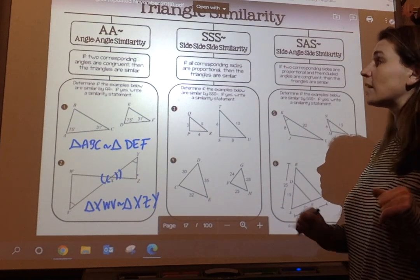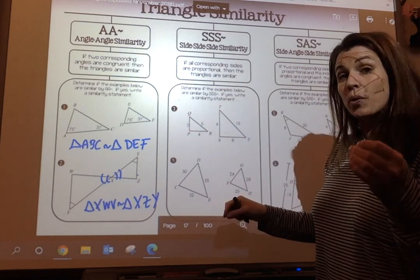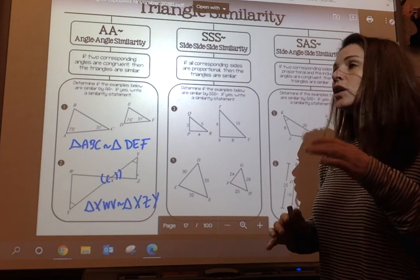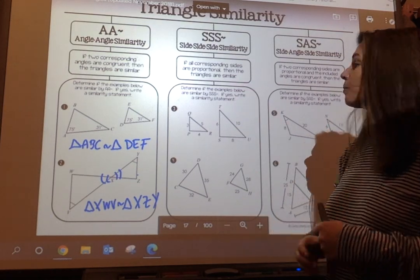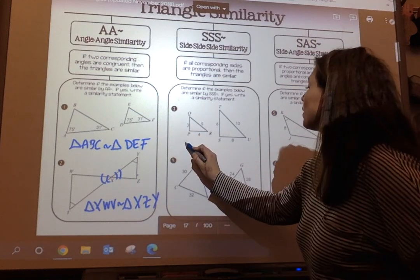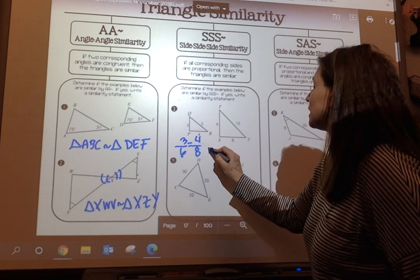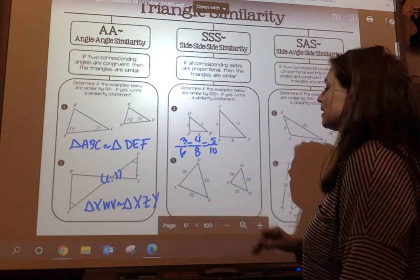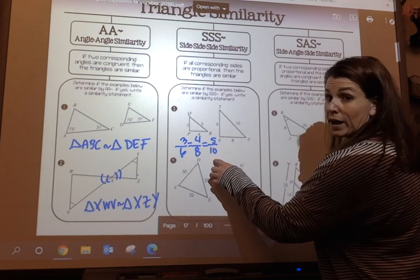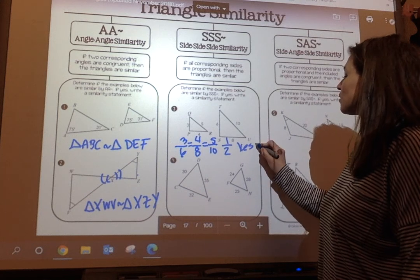Side-side-side similarity says all corresponding sides are proportional, just like we've already done. So here's the deal: don't get lazy. You have to test that all three sides are proportional. So if you look at this, is 3 proportional to 6? Is 4 proportional to 8? Is 5 proportional to 10? So I can reduce all of these to one-half, one-half, one-half. They all reduce to a scale factor of one-half, so yes, these are proportional.